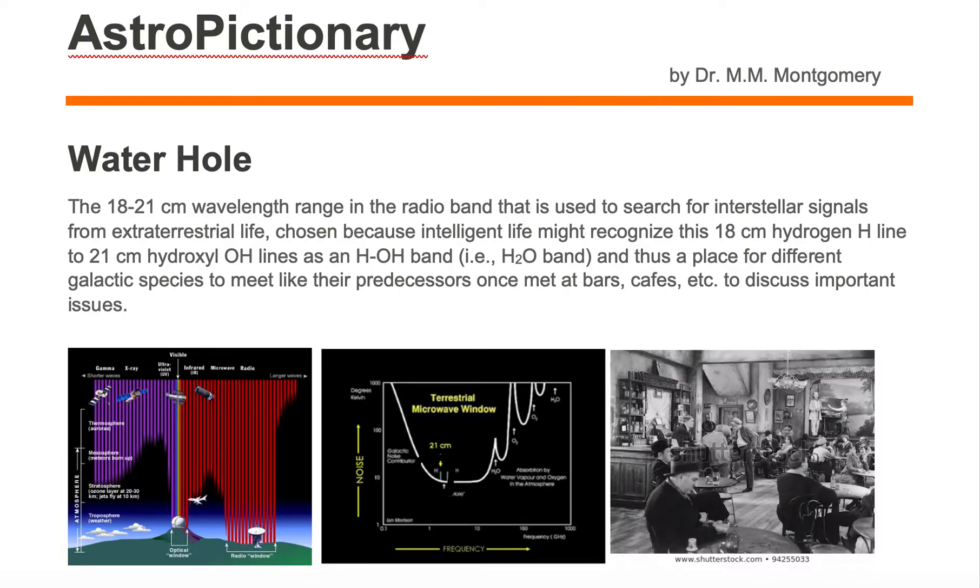The Water Hole is the 18 to 21 centimeter wavelength range in the radio band used to search for interstellar signals from extraterrestrial life, chosen because intelligent life might recognize the 18 centimeter hydrogen H line to 21 centimeter hydroxyl OH lines as an